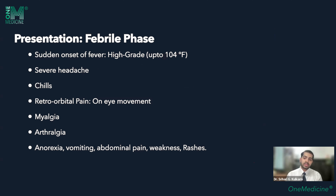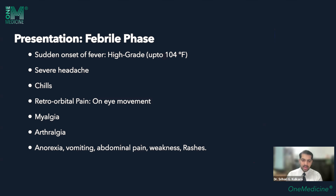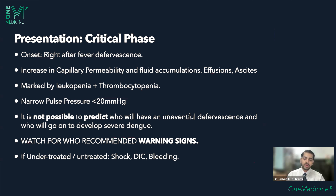Temperatures can reach 104 degrees Fahrenheit and can be continuous. Patients can have severe fever and retroorbital pain — classically the pain increases on movement of the eyes — along with myalgias, arthralgias, anorexia, and other constitutional symptoms. Various types of rashes and exanthems can also form during the febrile phase.